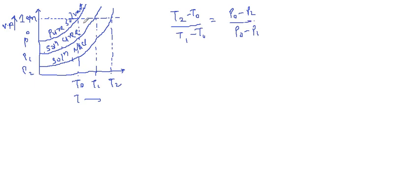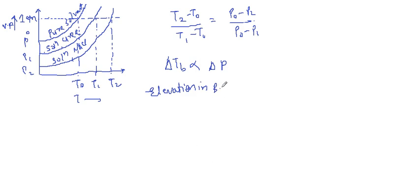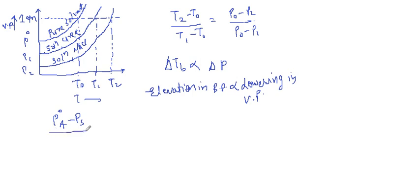From that graph we can conclude that delta Tb is directly proportional to delta P — that is, the change in boiling point is directly proportional to the difference in pressure. So elevation in boiling point is directly proportional to lowering in vapor pressure. The lowering in vapor pressure is given by (P0 minus Ps) divided by P0, which equals Nb divided by (Na plus Nb).